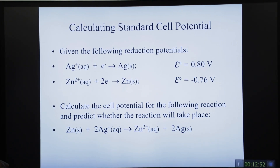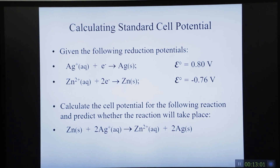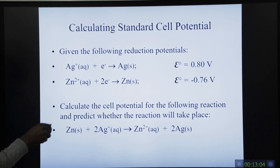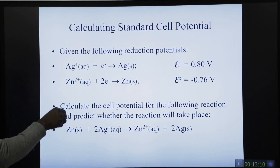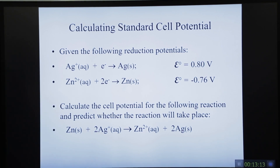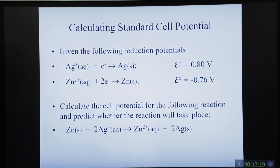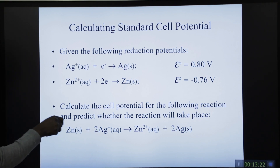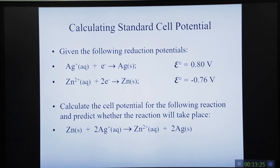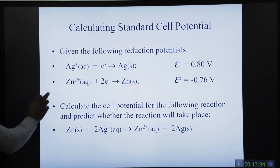Let's calculate the standard cell potential of silver and zinc and determine which is the anode and which is the cathode. Given reduction potentials: Ag⁺ + e⁻ → Ag, E = +0.80 V, and Zn²⁺ + 2e⁻ → Zn, E = −0.76 V. Which one should be the anode and which the cathode?